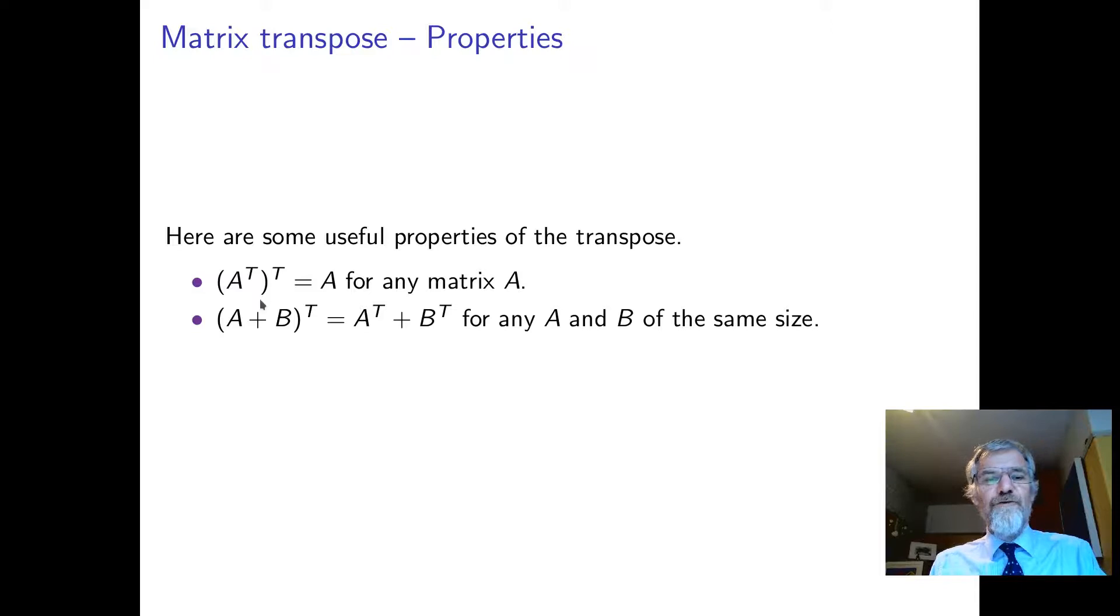If you transpose twice, you get back to where you started, because you swap rows and columns and then you just swap them back. If you add two matrices and transpose them, you can just transpose them before or after you add them, because you're just adding the corresponding elements.